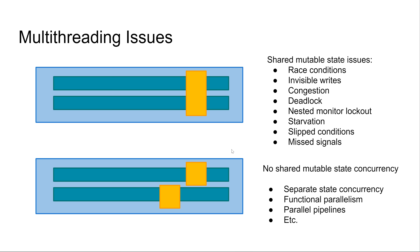As you can see, multi-threading is really beneficial in computer programming. However, it is not without problems. The first concurrency model that appeared was a shared mutable state model, in which threads can read and write the same memory inside an application. This type of concurrency model leads to possible race conditions, invisible writes, and when you try to fix those, you can get contention, deadlock, nested monitor lockout, starvation, missed signals, and many other issues. To solve these, you can either use constructs that handle these problems, or completely change to a no-shared mutable state concurrency model.